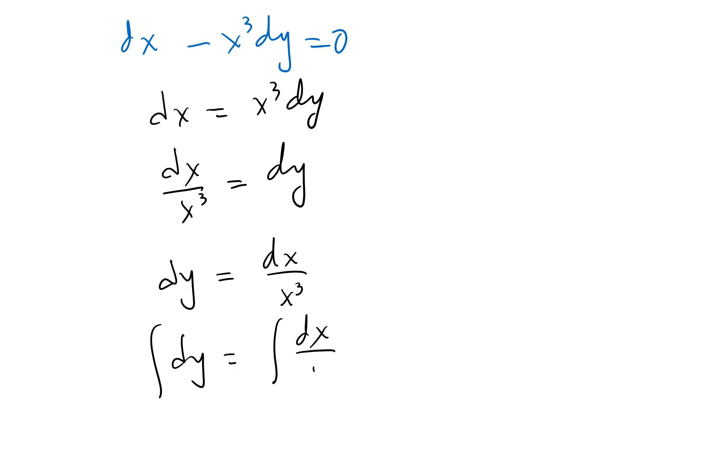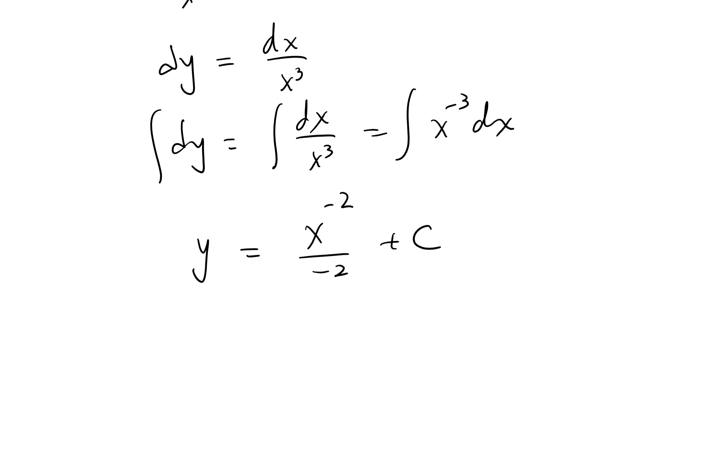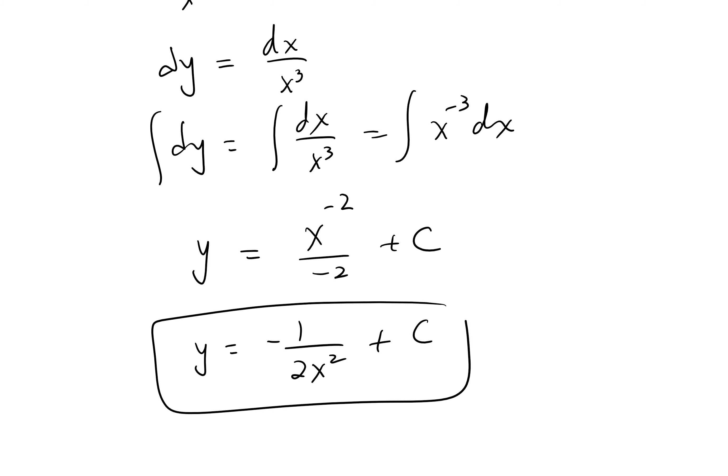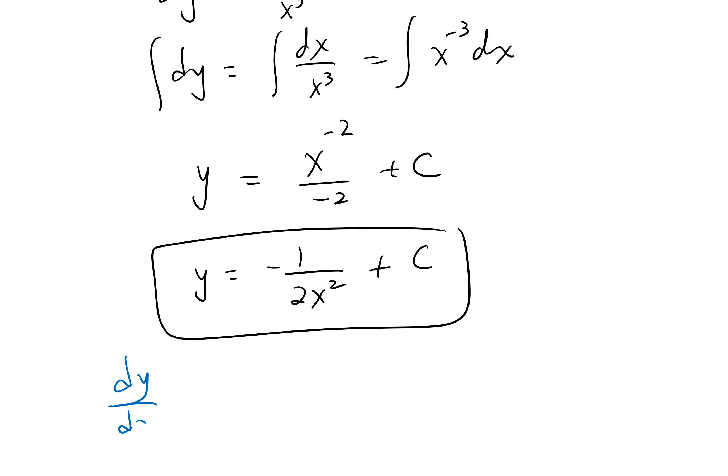Integrate both sides. And to do so, you can bring the x, 1 over x cubed up as x to the negative 3. The left hand side is y, the right hand side gives us x to negative 2 over negative 2 plus c. Then y would be negative 1 over 2x squared plus c. Make sure no negative exponents. The right hand side is y minus 1 over x squared.